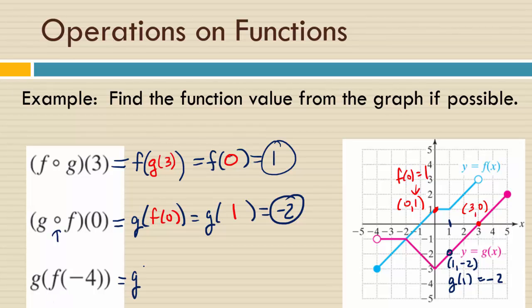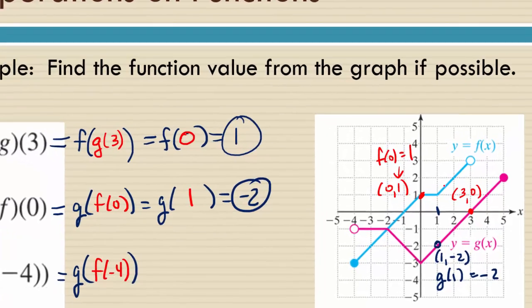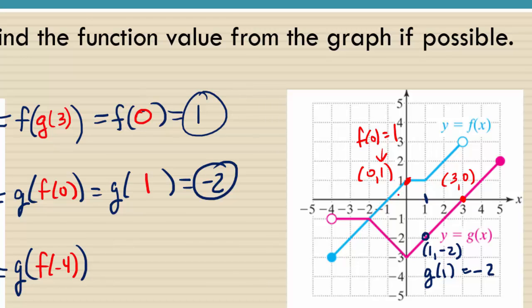And lastly, we have g of, just to emphasize, I'm going to make this in red here, f of negative 4. How do we find f of negative 4? We go to the f function, right? And we look for when x is negative 4. We're looking at this point here. What are the coordinates of that point? Negative 3. Good. Negative 4, negative 3.